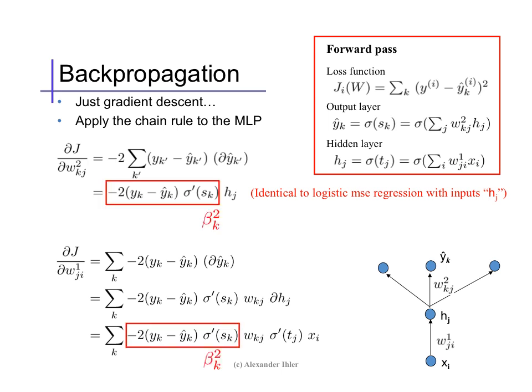We can notice that in the second computation, we use the term (y minus y-hat) times the slope of sigma at sk. But we already computed this value when we were computing the derivatives of layer 2, so we can reuse it here. We'll just call it beta at layer 2, sub k, propagating the derivative values backward to the previous layer. If we had another, even earlier layer, it would involve terms that included the sum over k of (y minus y-hat), sigma prime sk, wk, sigma prime of tj. We could save those values and propagate them backward again to an earlier layer. This gives gradient descent its popular name: backpropagation.